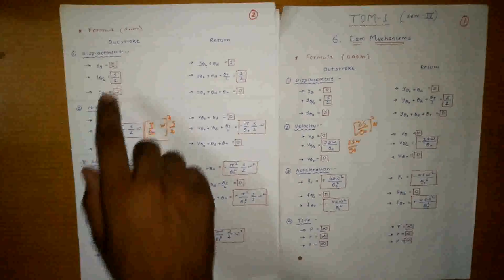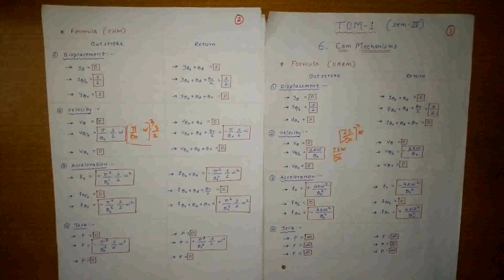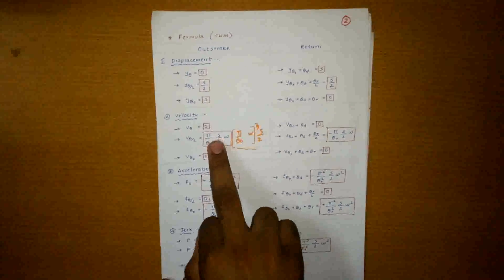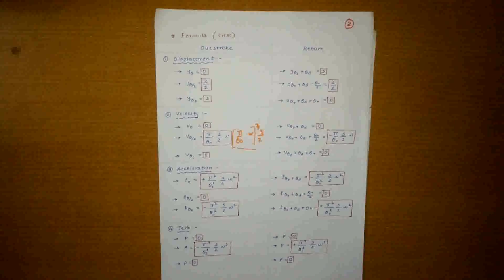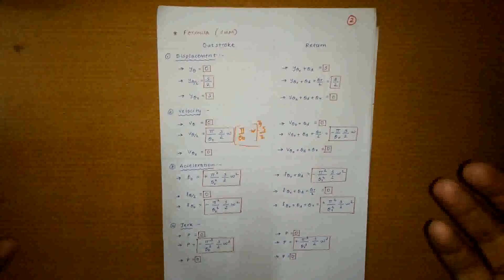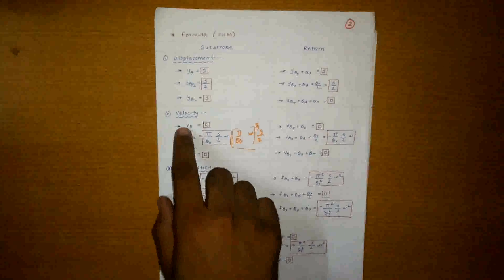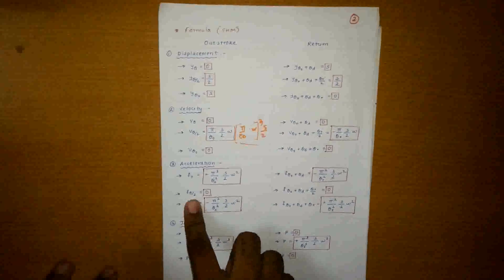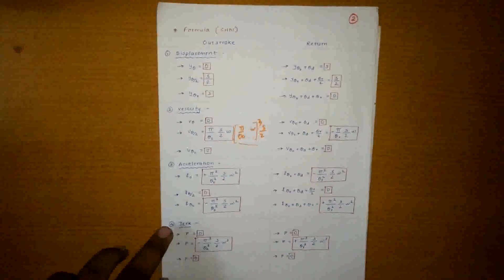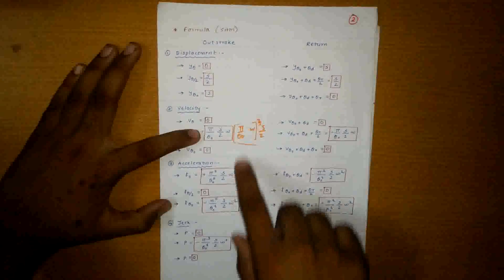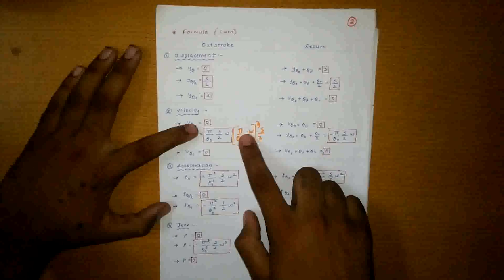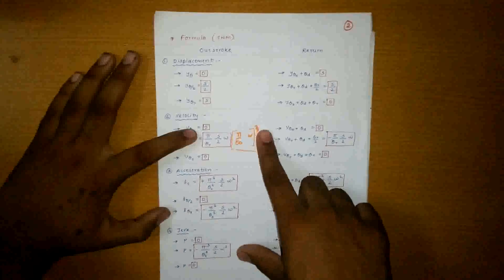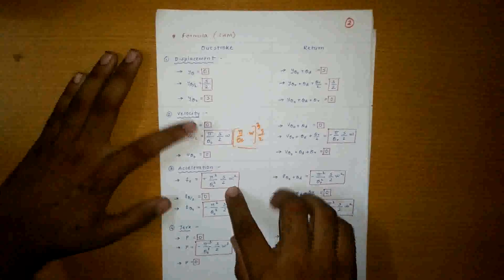For displacement, the values for UARM and SHM are both the same. For velocity in SHM, the formula is (pi/theta0)·(s/2)·Omega. Velocity in SHM follows the same path as URM — first and last values are 0. For acceleration in SHM the middle term is 0. The main difference is that SHM has a jerk formula: you remember one formula, the square of this formula with s/2 outside, and the cube of this formula with s/2 outside — (pi/theta0)·Omega, squared or cubed.